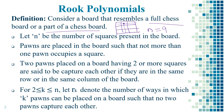Here is the condition: 2 ≤ k ≤ n. The board should contain a number of squares between the value 2 and n. k represents the total number of pawns to be placed, and r_k denotes the total number of ways in which k pawns can be placed on a board. If we have 2 pawns, that is k = 2, then we calculate r2.